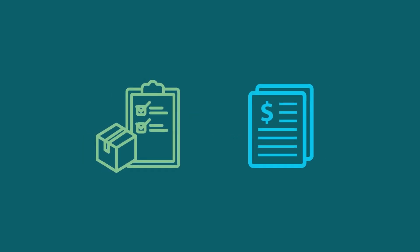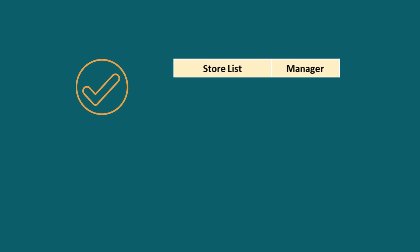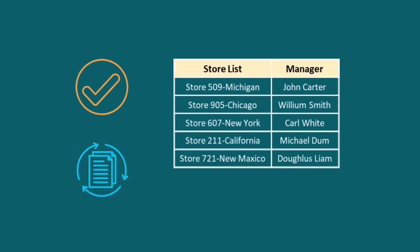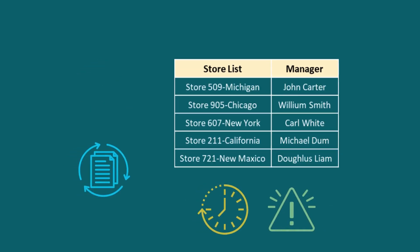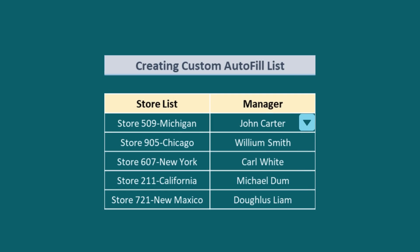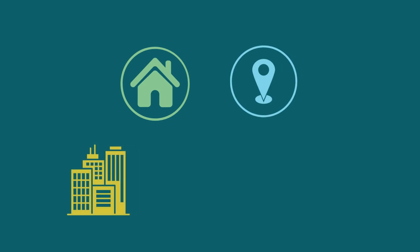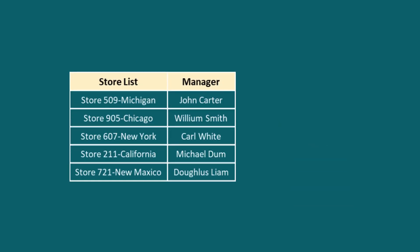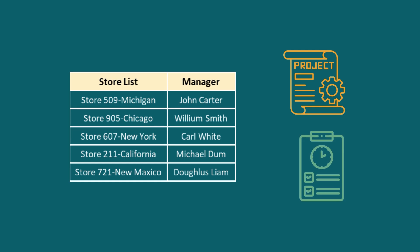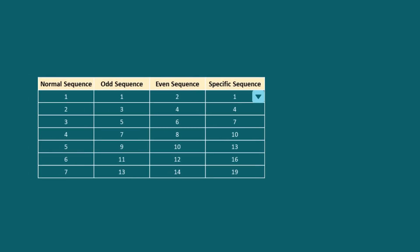When managing an inventory or sales database, you want to ensure accurate and consistent data entry to save your time and reduce errors. Creating a custom autofill list in Excel is the best option for you. If you work with addresses or locations, you can create autofill lists for cities, states, or countries. Even in project management or task tracking, you can create autofill lists for project names, task types, or status options.